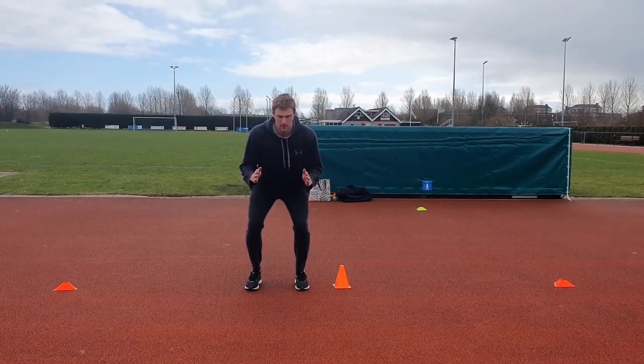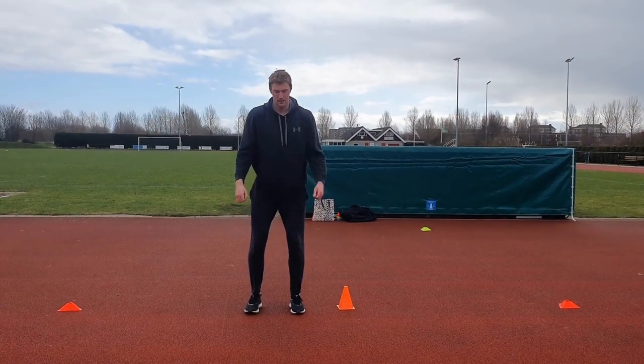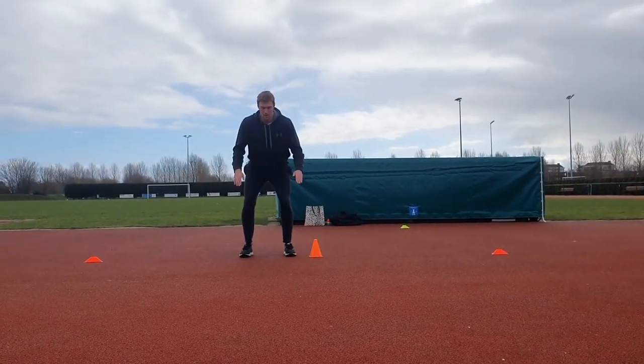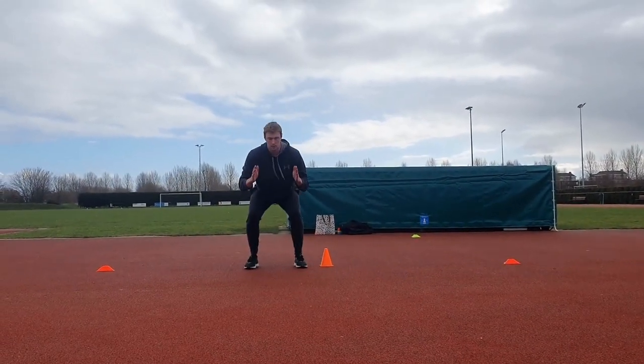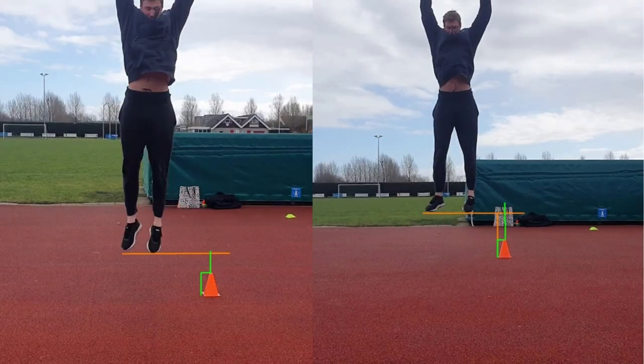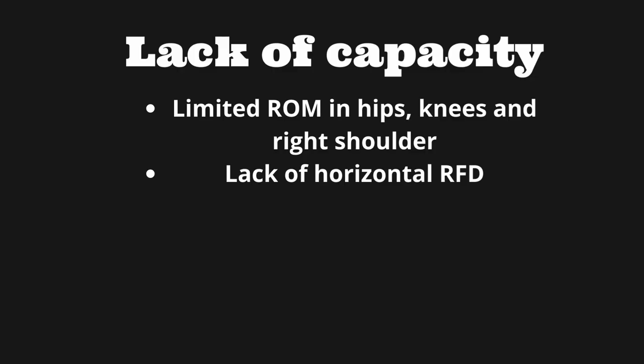Now we compare the squat jump versus the counter-movement jump, and we can see that the counter-movement jump is higher than the squat jump. From this, I think Athlete 2 is mostly lacking in capacity due to his limited range of motion in the hips, knees, and shoulders, and the amount of horizontal force production he can generate during the start of the acceleration.